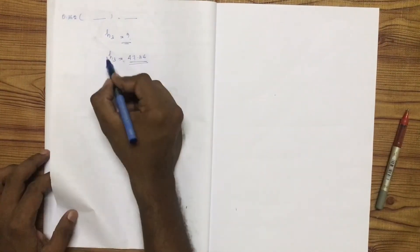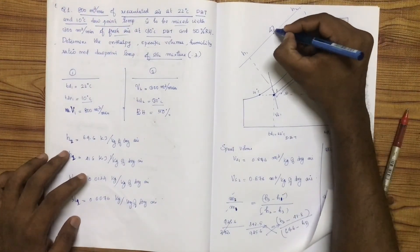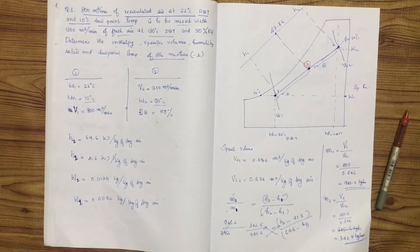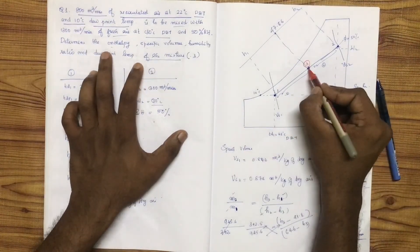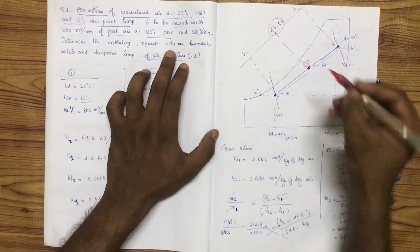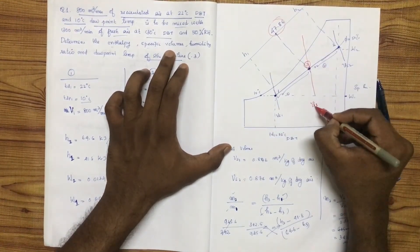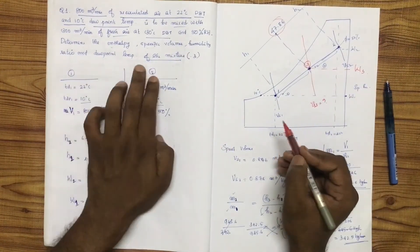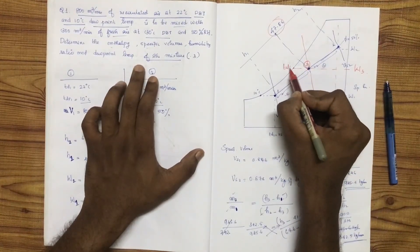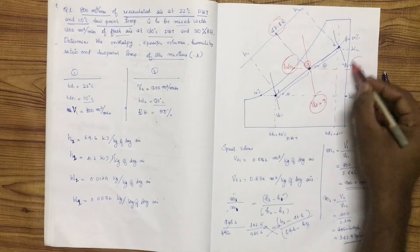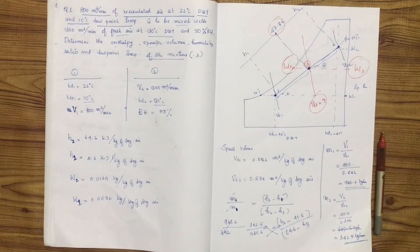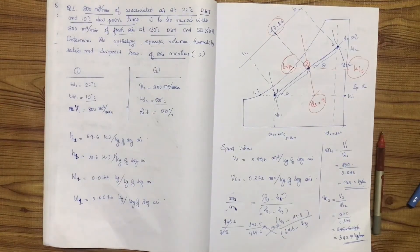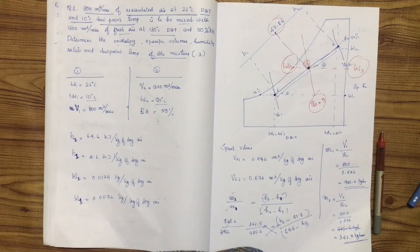Solving the equations, we find that H3 is equal to approximately 48.86 kJ per kg of dry air. This is the enthalpy of the mixed air at state 3.